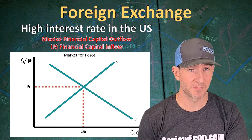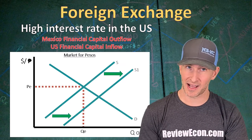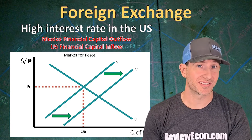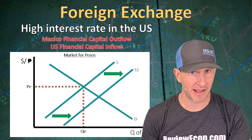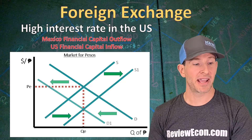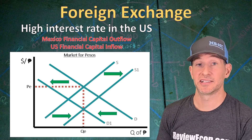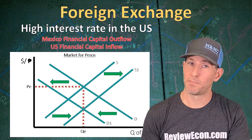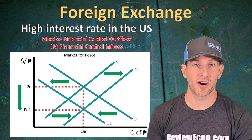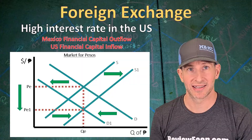On the foreign exchange market for the Mexican peso, we are going to see an increase in the supply of Mexican pesos as foreign investors sell Mexican interest-bearing assets, and a decrease in the demand for Mexican pesos as foreign investors are less likely to buy Mexican assets. Both of those shifts cause the equilibrium exchange rate to fall, meaning the Mexican peso has depreciated.